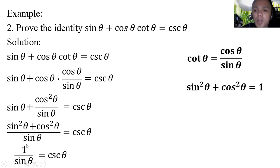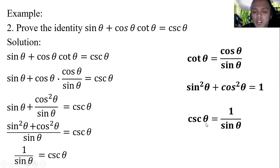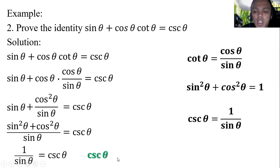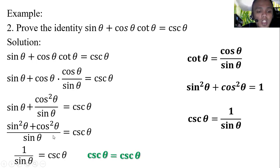From the fundamental trigonometric identities, 1 over sine theta is equal to cosecant theta. So substituting, we replace 1 over sine theta with cosecant theta. Therefore, cosecant theta is equal to cosecant theta, and the identity is proved.